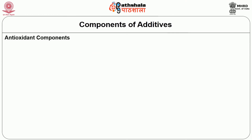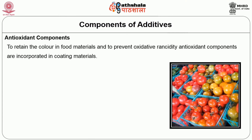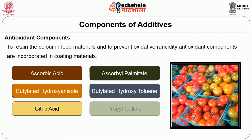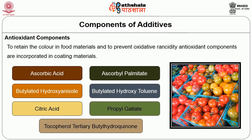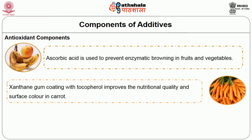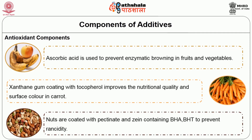The next component is antioxidant components. To retain color in food materials and to prevent oxidation and rancidity, antioxidant components are incorporated in coating materials. These include ascorbic acid, ascorbyl palmitate, butylated hydroxyanisole, butylated hydroxytoluene, citric acid, propyl gallate, and tocopherol. Ascorbic acid is used to prevent enzymatic browning in fruits and vegetables. Xanthan gum coating with tocopherol improves nutritional quality and surface color in carrot. Nuts are coated with pectinate and zinc containing BHA and BHT to prevent rancidity.